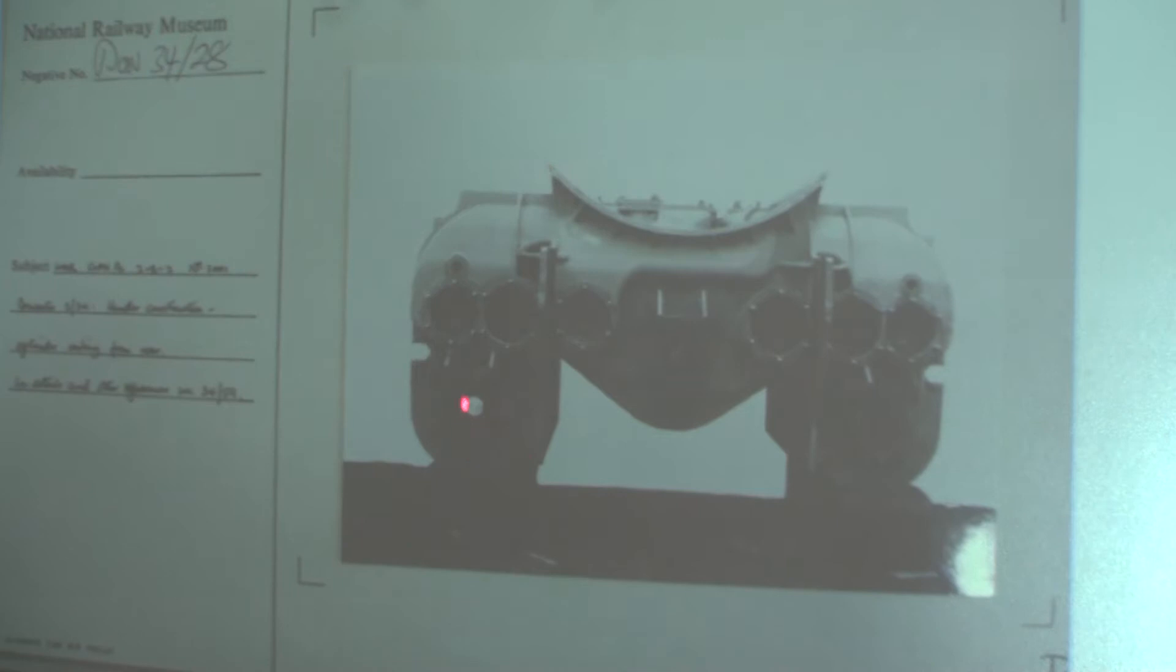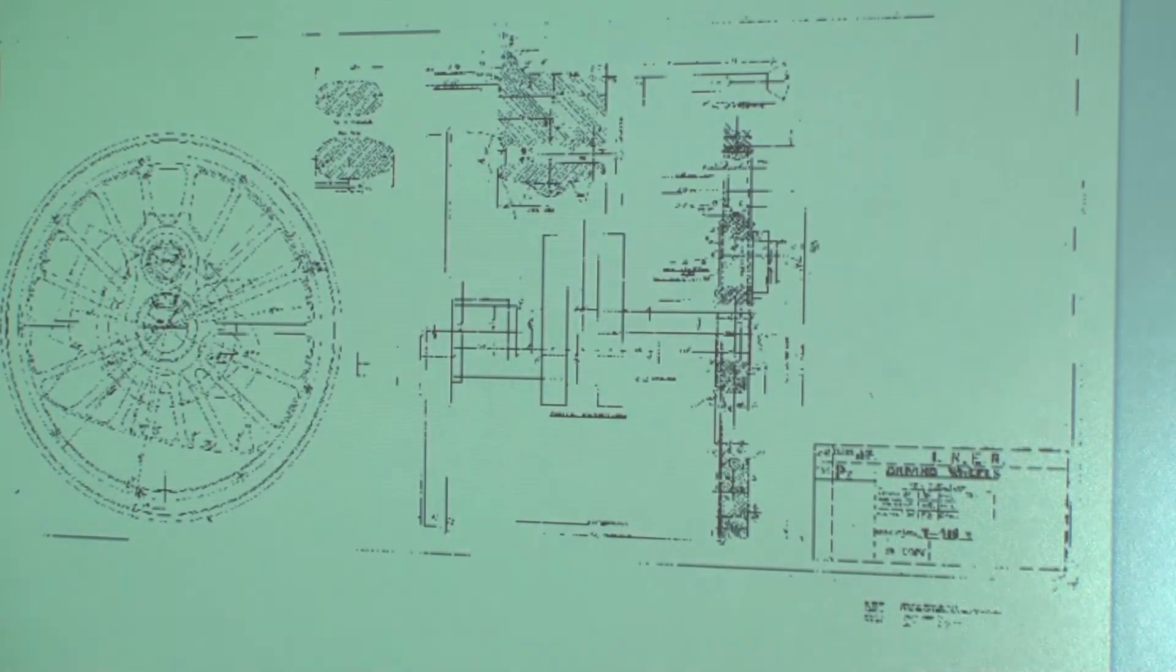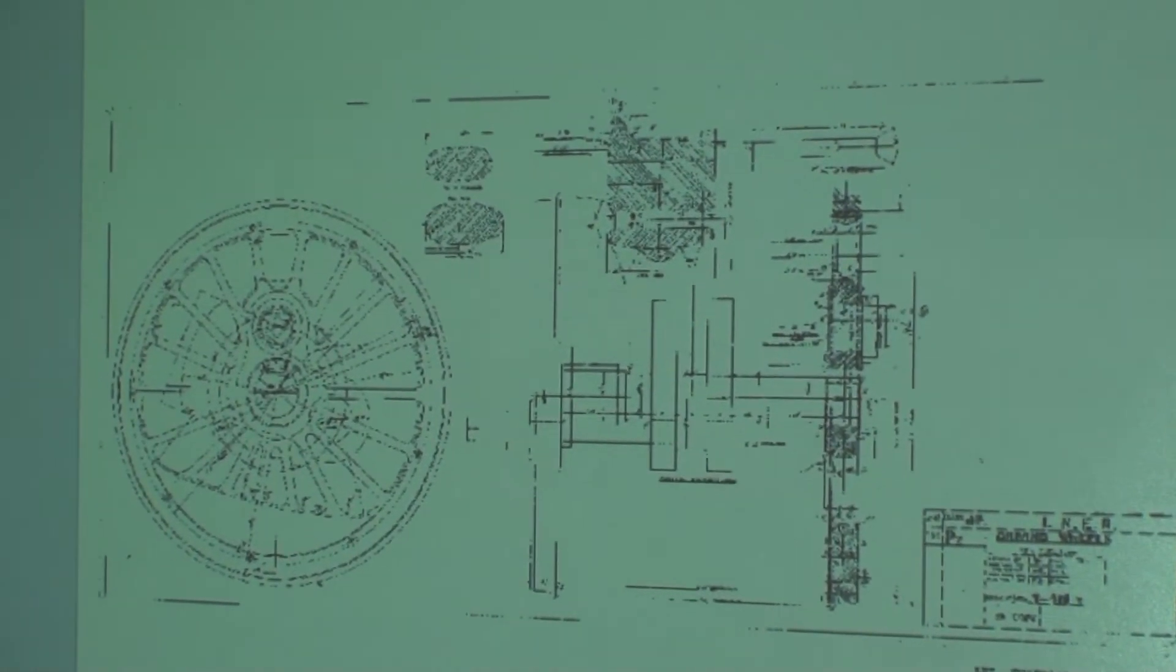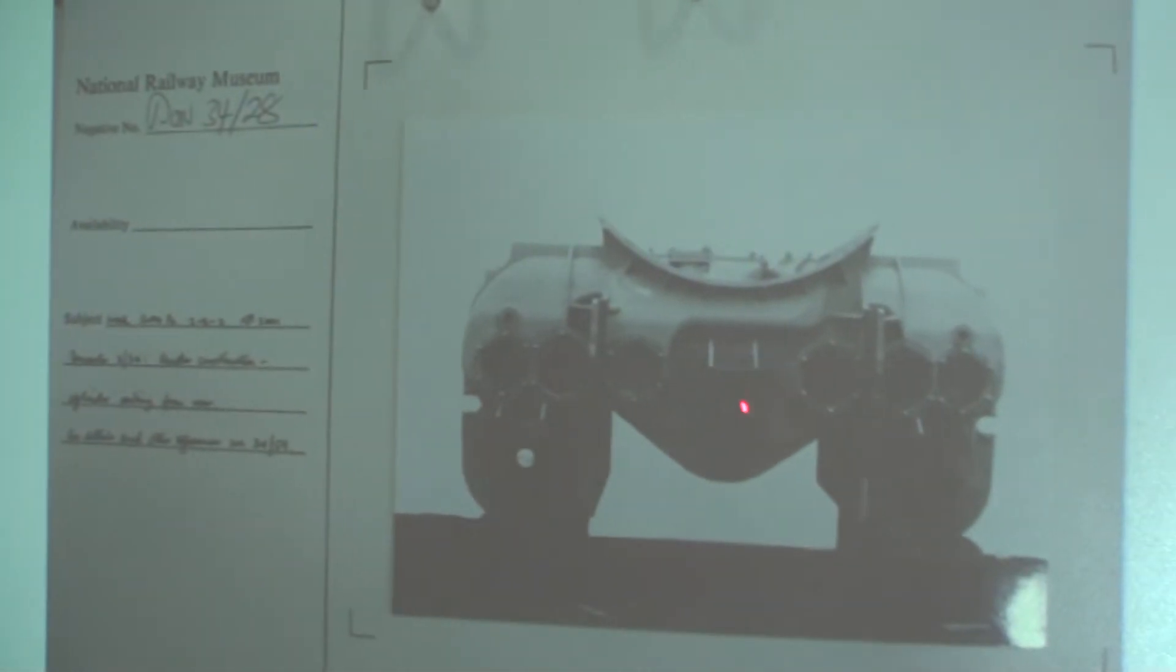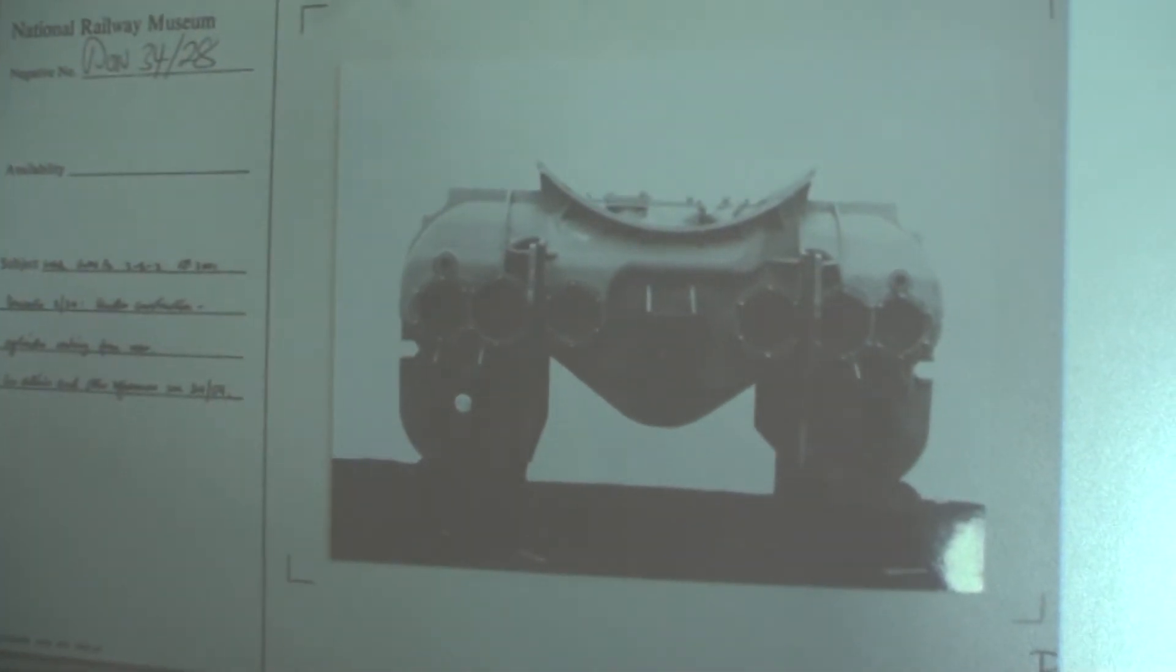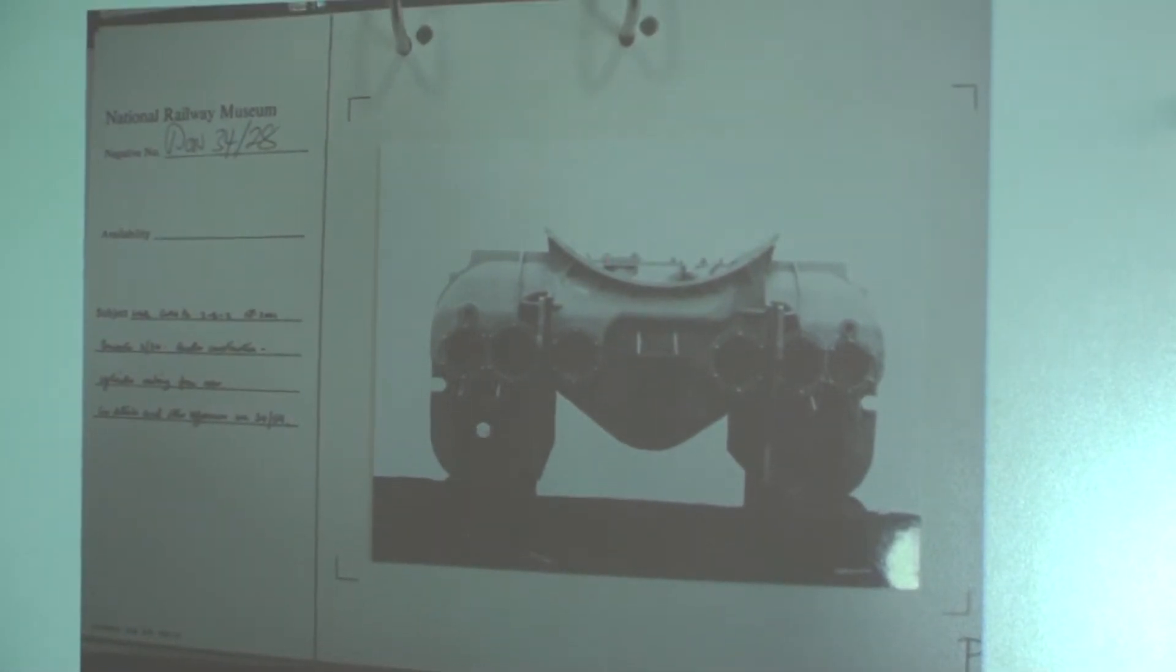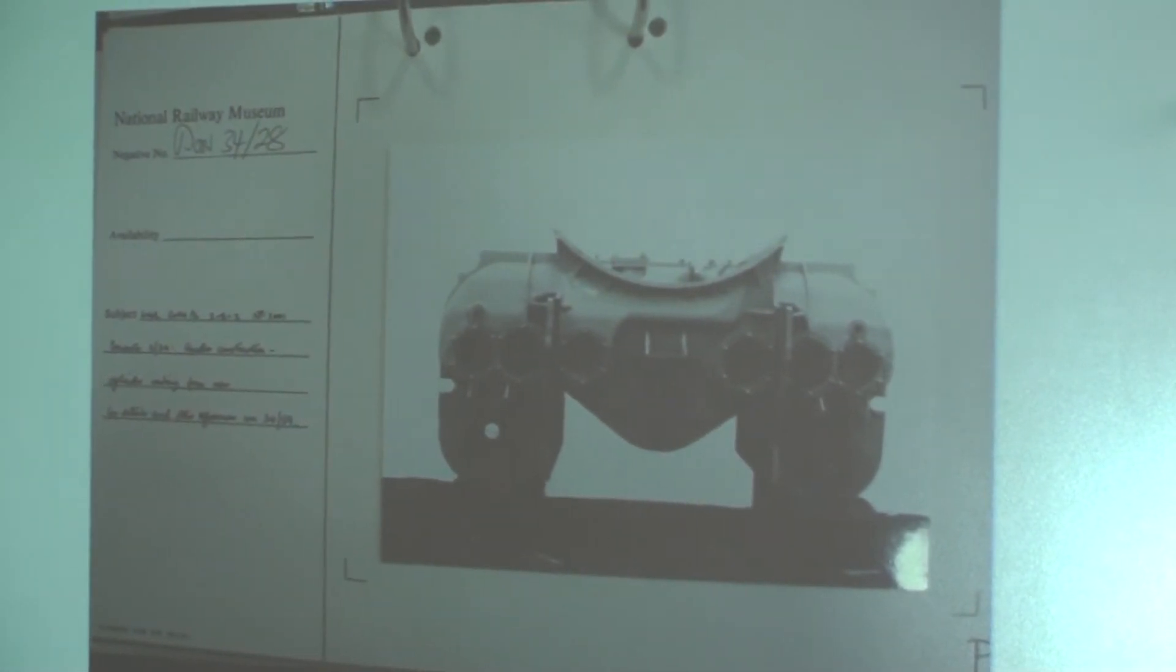So again, it's showing you the one, two, three, one, two, three main cylinders, and then you've got the inlet and the exhaust valves. And then, this is what the boiler sits on.